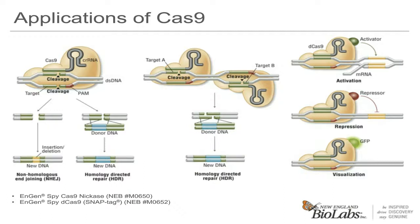NEB has developed a novel D-Cas9 that is a SNAP tag fusion. SNAP technology is unique to NEB, and the N-terminal SNAP tag allows for covalent attachment of fluorophores, biotin, and a number of other conjugates useful for visualization and target enrichment. Both the nickase and D-Cas9 contain nuclear localization signals. NEB has an existing portfolio of SNAP tools available such as magnetic beads for capture and SNAP biotin, which can be used in conjunction with streptavidin beads for pull-down or enrichment.